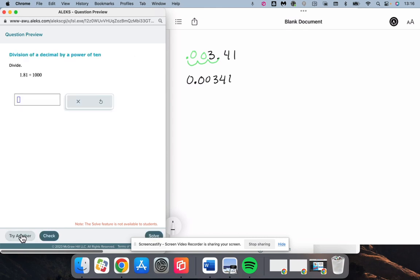We'll do another. We have 1.81 divided by 1,000. Similar to before, we have 3 zeros. Our decimal is going to move 3 spots to the left: 1, 2, 3. Fill in the empty spots with zeros. We have 0.00181, and that's the same thing that Alex got.